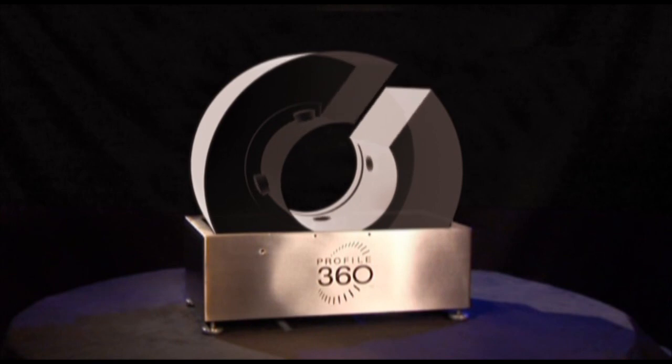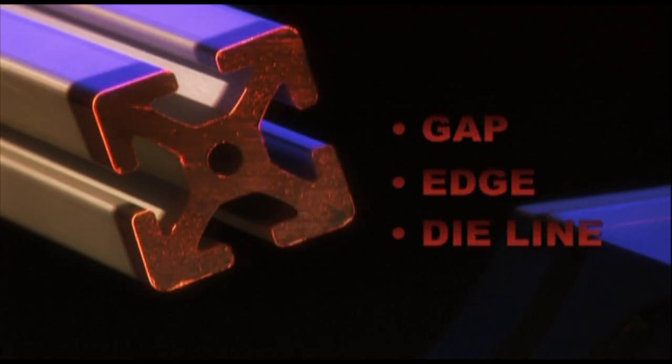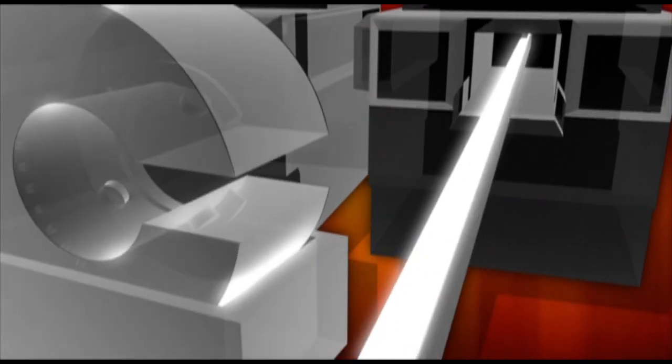The C-frame can rotate to better view specific features of your product such as a gap, edge, or die line. The C-frame design enables you to easily move the system on and off the production line while your operation continues.